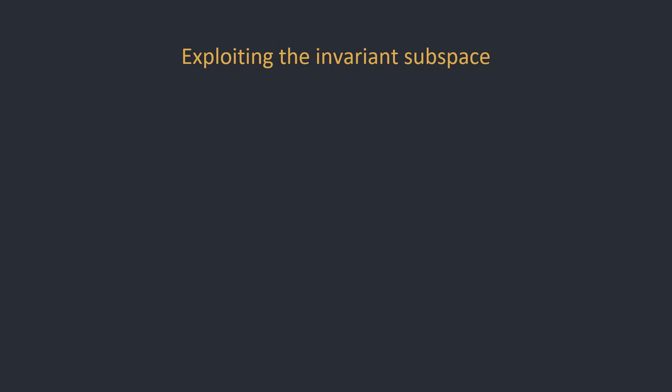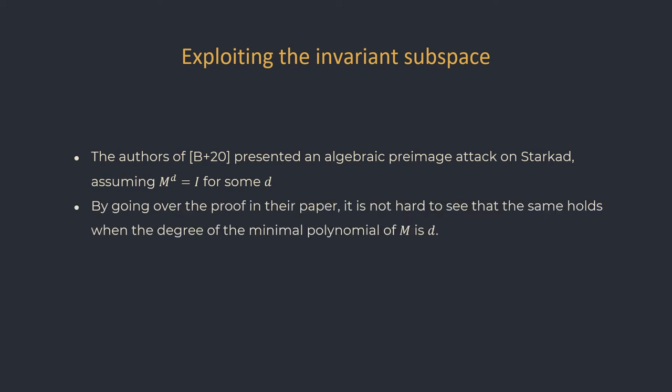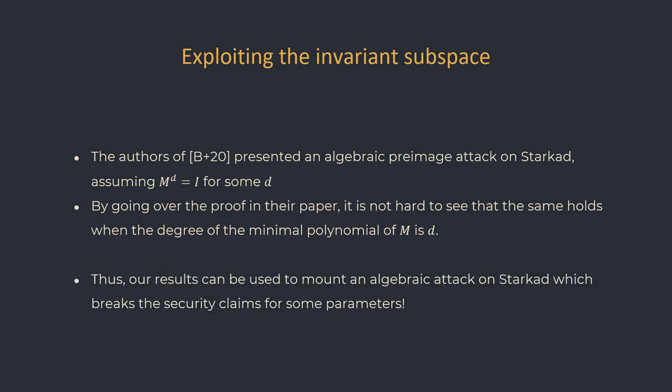As the main purpose of the middle layer is to increase the algebraic degree, this invariant subspace is obviously bad news. We didn't use the invariant subspace ourselves to attack the cipher, but left it to future work. In a parallel research by Bain et al. published in Crypto 2020, it was discovered that if the Starkad matrix has a small multiplicative order D, it is possible to mount an algebraic pre-image attack on Starkad. From their proof, it is fairly easy to see that the exact same holds for matrices whose minimal polynomial has degree at most D — which is exactly what we proved. So the invariant subspaces can be used to attack Starkad, and the attack even breaks the security guarantee for some choices of parameters.